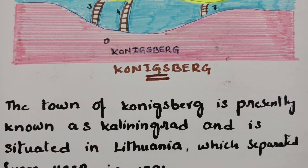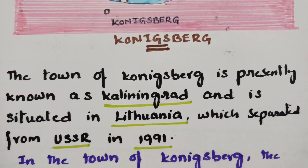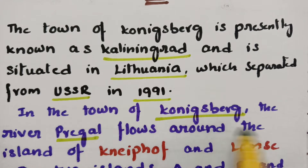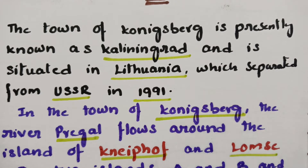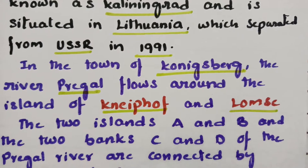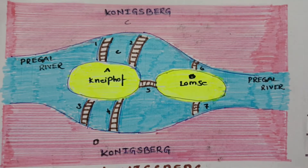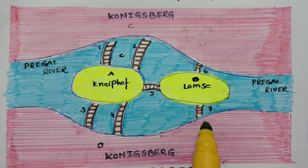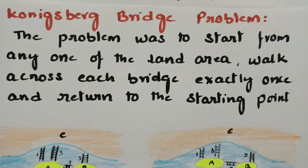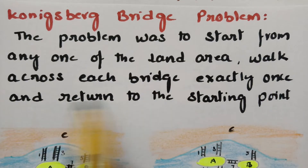The town Königsberg, presently known as Kaliningrad, is in Lithuania, separated from the USSR in 1991. The Pregel River flows around the islands Kneiphof and Lomse. The two islands A and B and the two banks C and D are connected by 7 bridges. The problem was to start from any one of the land areas, walk across each bridge exactly once, and return to the starting point.